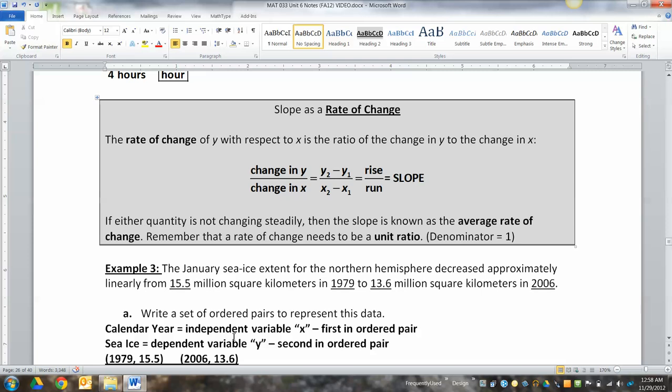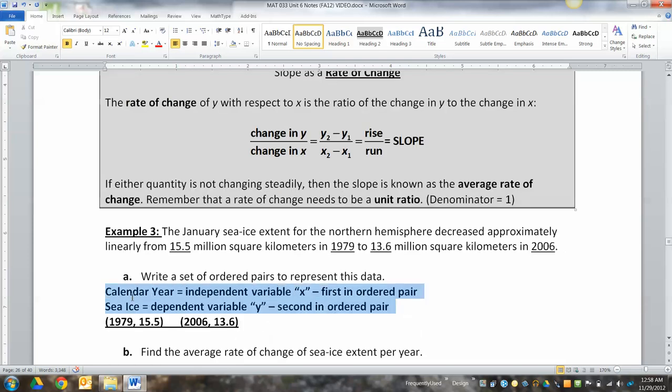Now, the other thing to keep in mind here is that it pays, I know it seems kind of silly, but it pays to write this down somewhere for a lot of these problems, like figure out which one's your independent, which one's your dependent and write it down for yourself because it'll help you later on when you have to answer more questions. Okay. So I wrote that down and then what they were asking for was the ordered pair parts. That's what I underlined right here. So in 1979, because that's my year, that's my X, I had 15.5 million square kilometers. And then in 2006, I had 13.6 million square kilometers. All right. So there's the ordered pairs. All good with that.